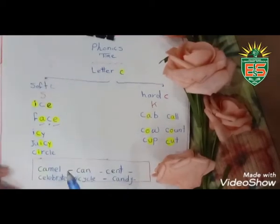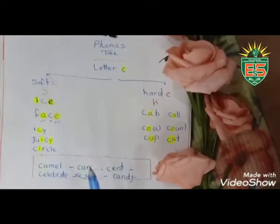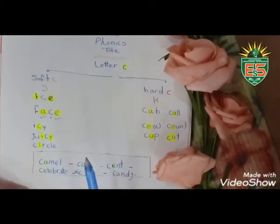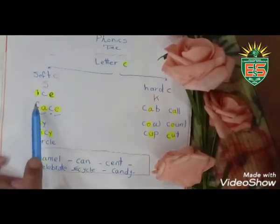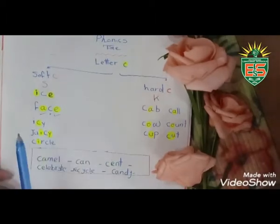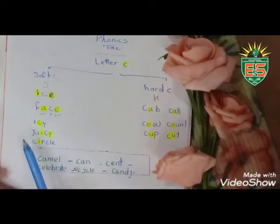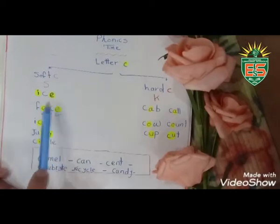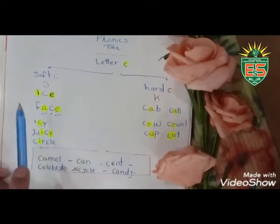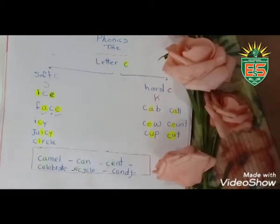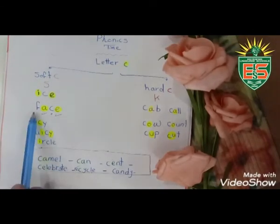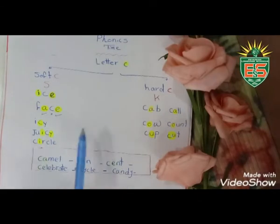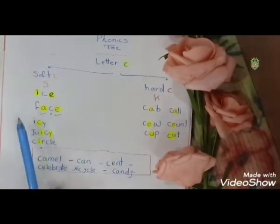Teacher, when can I pronounce it as 's' and when as 'k'? Let's see. If letter C comes before I and E, I pronounce it like 's'. Yes, I can't say 'ice' with 'k', I say 'ice'. If letter C comes before A and E, like 'face', I pronounce C as soft 's'.